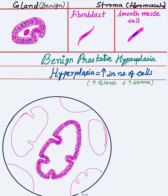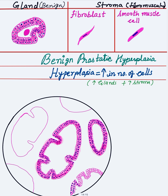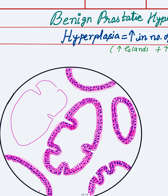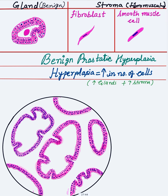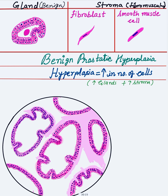Similarly, draw all the glands with double-layer epithelium. Take care to always draw the double-layered epithelium, as that shows the benignity of these glands. Draw all the glands like this until the glands are completed. After drawing the glands, first fill in the pink color in the interglandular spaces — this is the stroma. Fill it with pink color first.